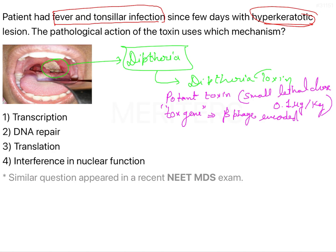The production of the toxin is regulated by iron levels. When the iron level is less than or equal to 0.1 milligram per liter, production of diphtheria toxin begins and keeps increasing.